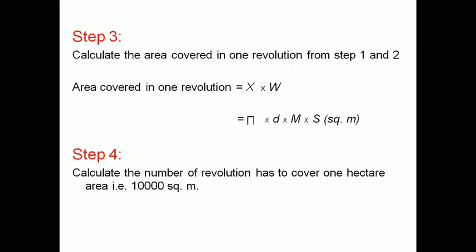Step 4: Calculate the number of revolutions required to cover one hectare, which equals 10,000 square meters. That means how many revolutions of the transport wheel will be required to cover one hectare area. It can be calculated as 10,000 divided by X multiplied by W — that is, 10,000 divided by the area covered in one revolution — which gives you the number of revolutions required to cover one hectare.